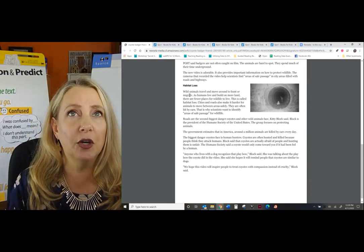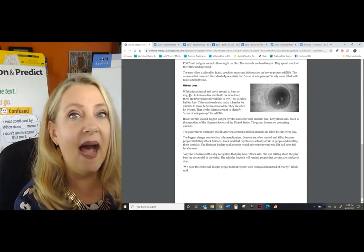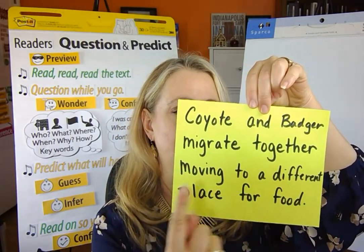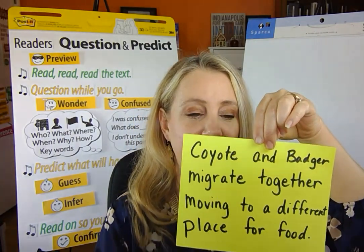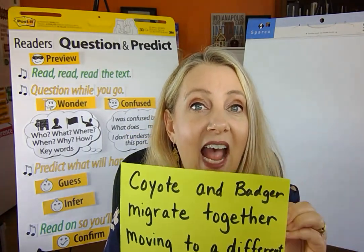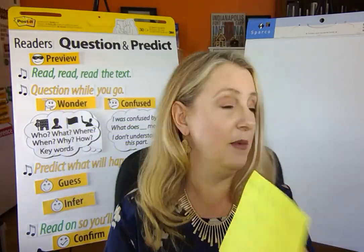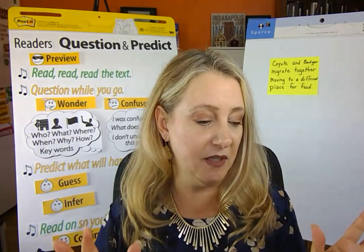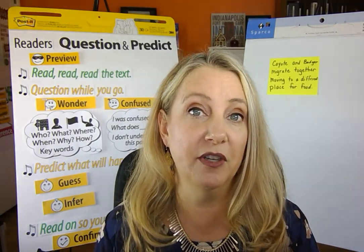How can I retell or summarize what I've learned in this passage, making sure I use that new vocabulary word? What if I say something like: the coyote and badger travel together looking for food as they migrate. Or: coyote and badger migrate to hunt for food. Actually, I wrote it down already in a sentence: coyote and badger migrate together, moving to a different place for food. So I'm just going to add this to my chart — it's just a sentence, maybe a couple of sentences, but I make sure I'm including this new vocabulary word.